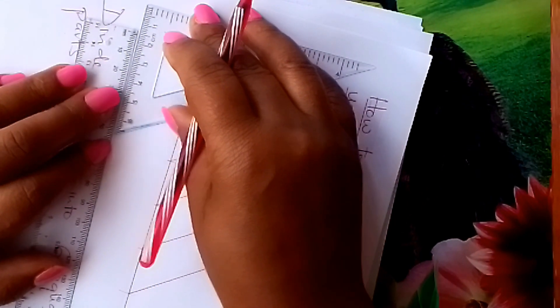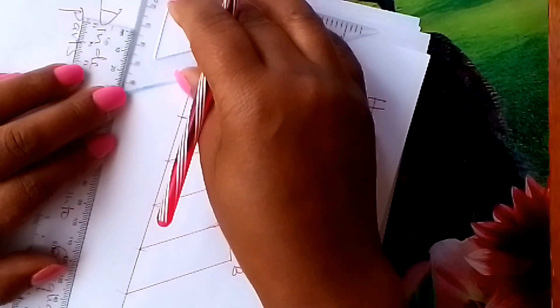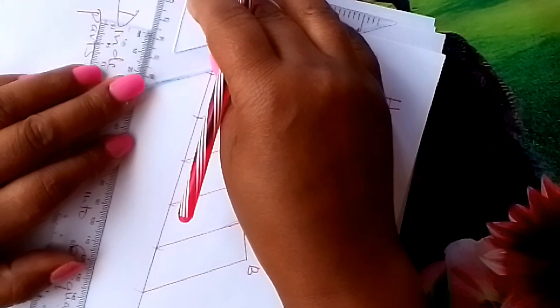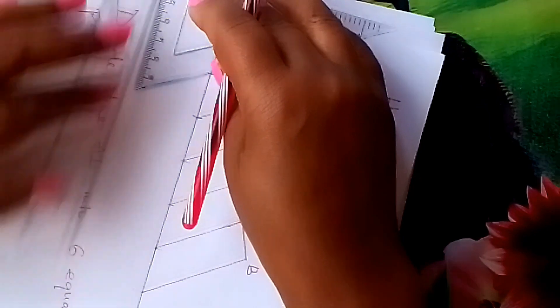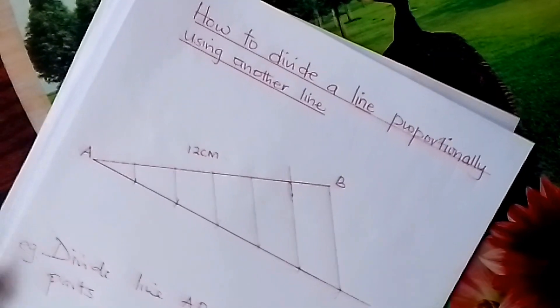And finally, learner, you move. Once you get to this other arc, you draw the final line there. Okay? Learner, look at our line.